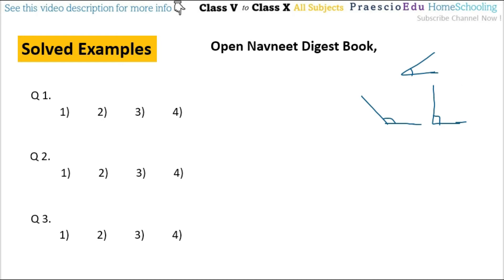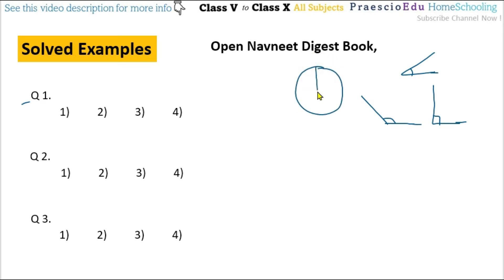Question number 1 in the solved examples: what will be the angle between the minute hand and hour hand at 3 o'clock? Suppose this is a clock — at 3 o'clock, the minute hand is always on 12 and the hour hand is on 3. This is exactly 90 degrees, so this is the right angle. Option number 3 is correct.